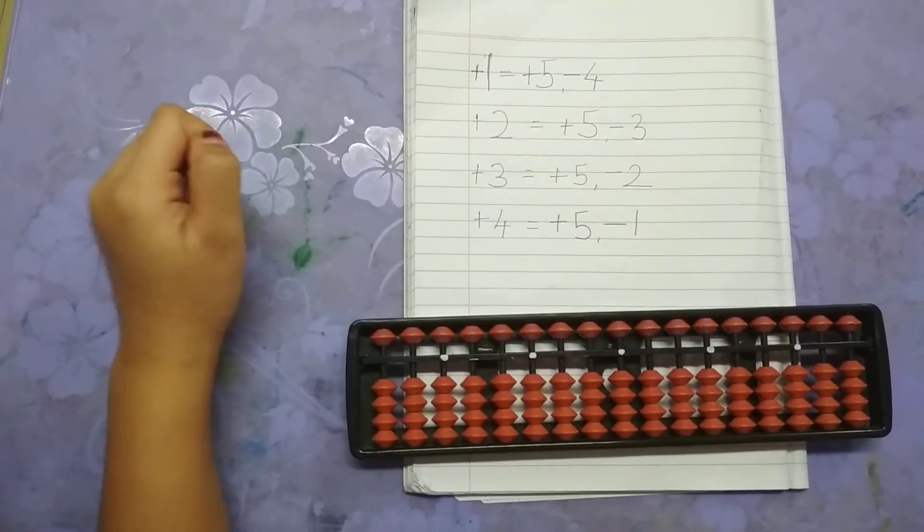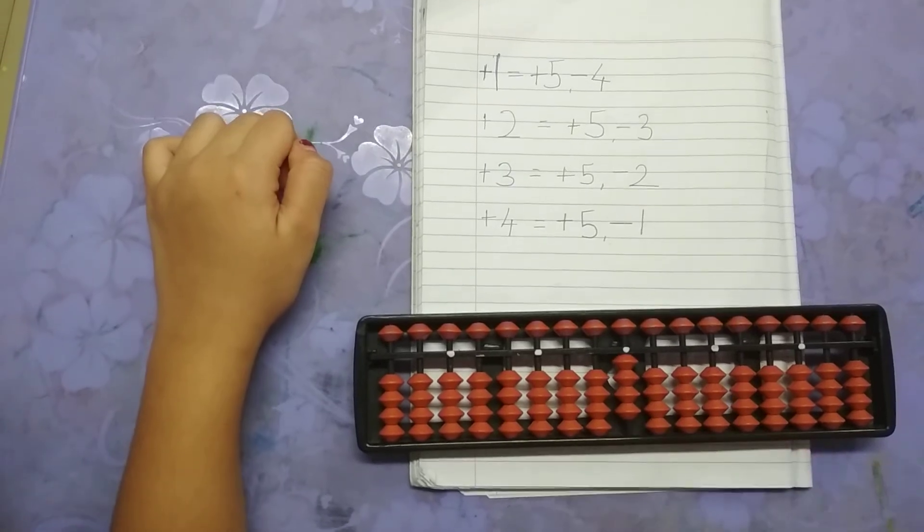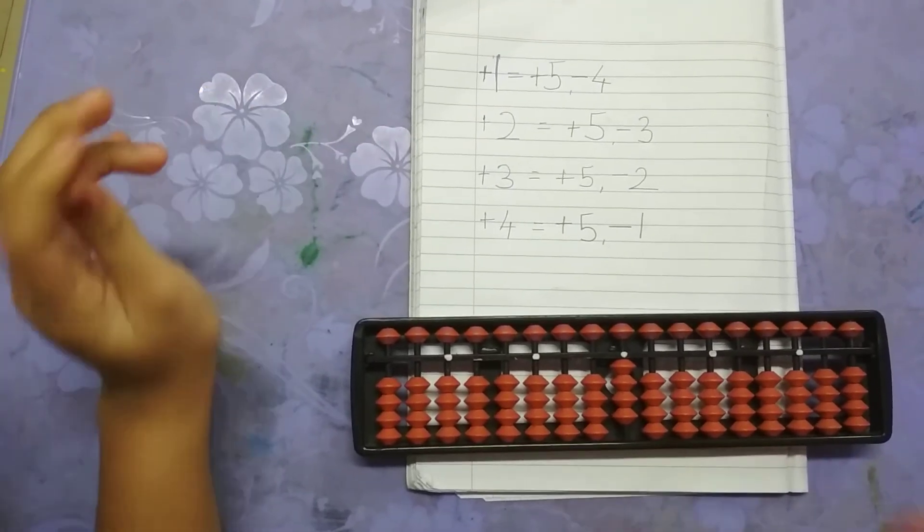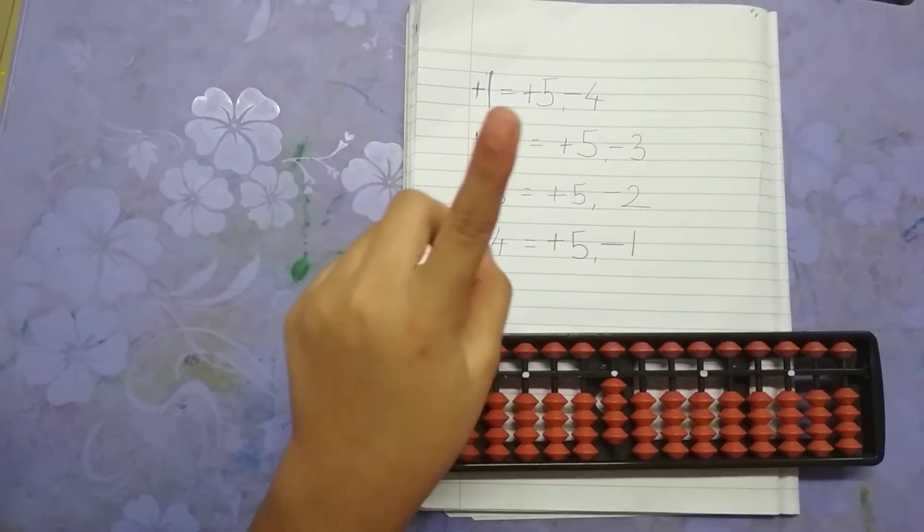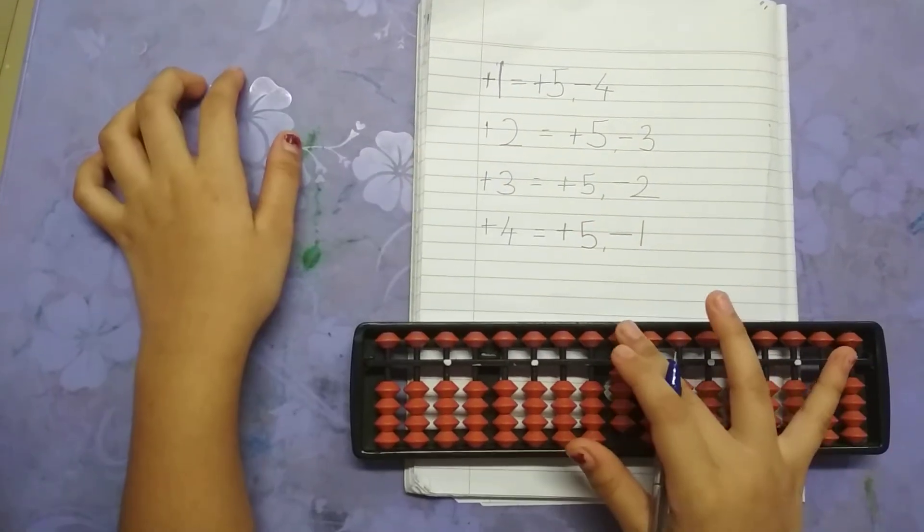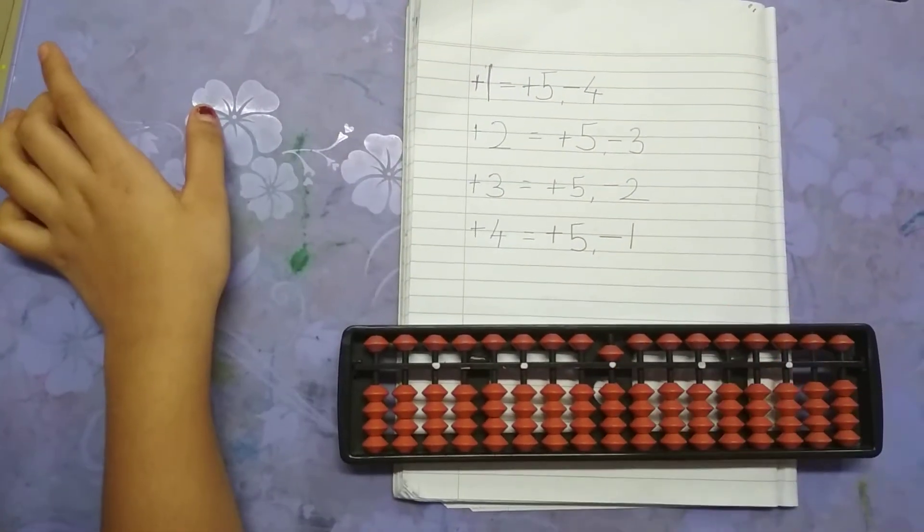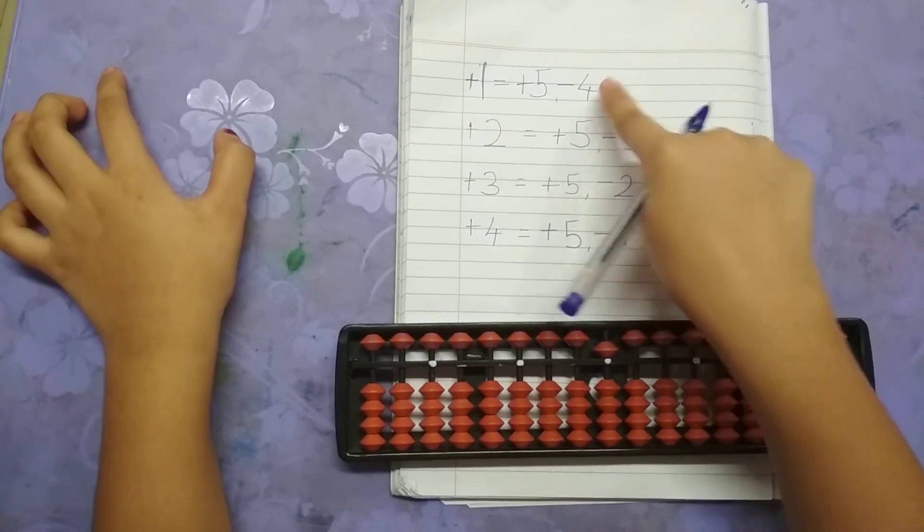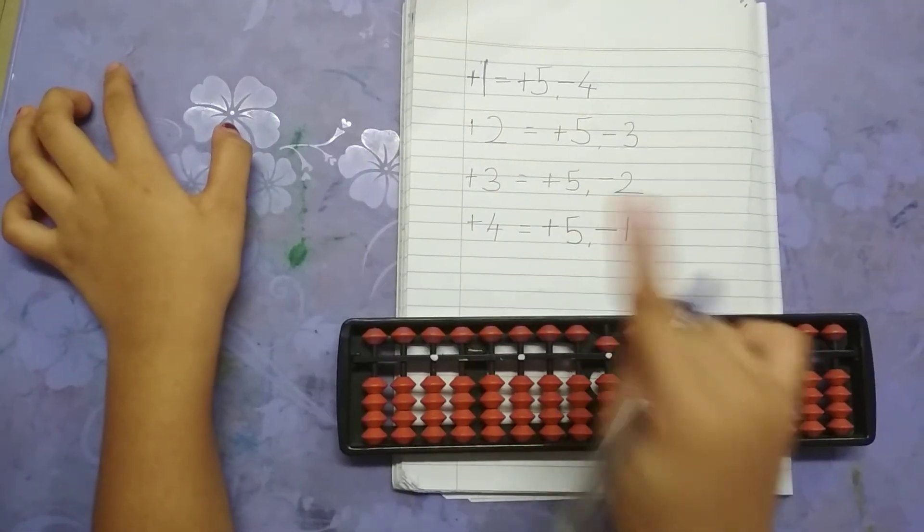I will give you another example. This is 4. Now we want to add 1 to it. We are going to plus 5 and minus 4. So 4 plus 1 equals 5.